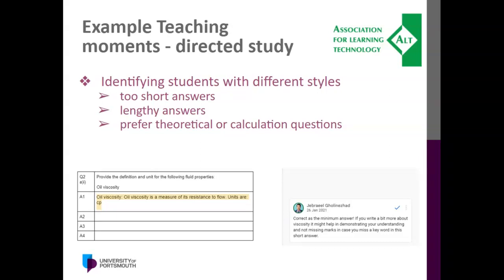You can identify students with weak mathematical backgrounds. Some write mathematical equations incorrectly, mishandle fractions, forget to write units, or forget the right decimal points. It is good to give comments and feedback about these things. Some students prefer theoretical questions, some prefer calculation-based questions — Exampedia helps you identify these tendencies.